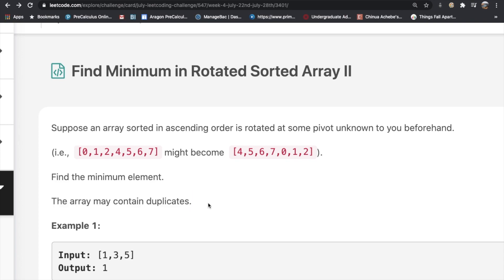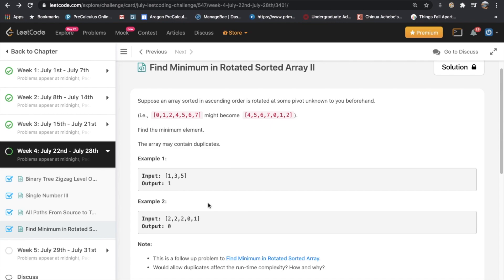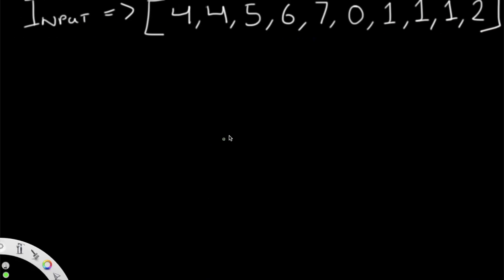Let's look at a quick example. Our input is 4 4 5 6 7 0 1 1 1 2 — it does contain some duplicates, so let's see how we work with that.